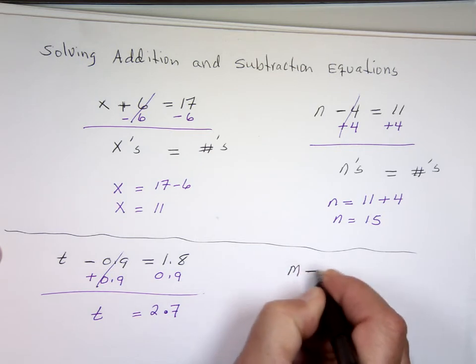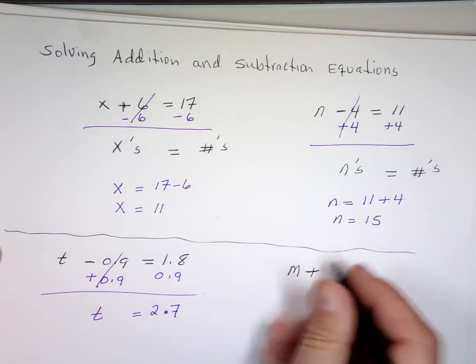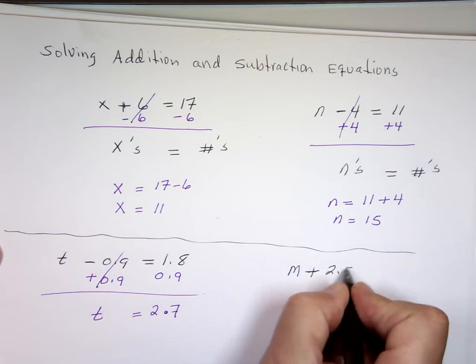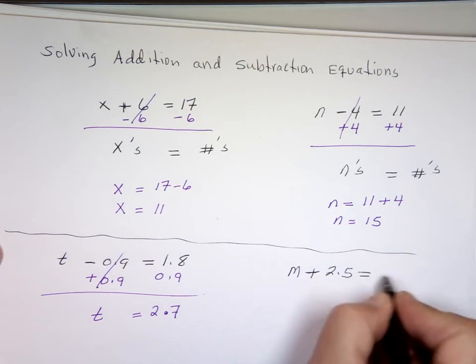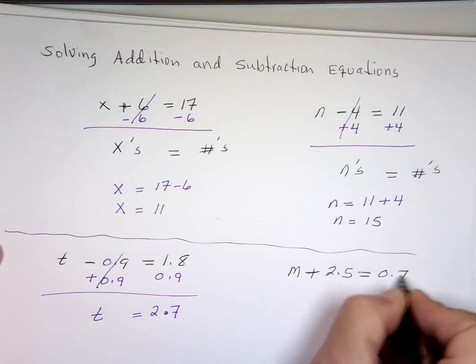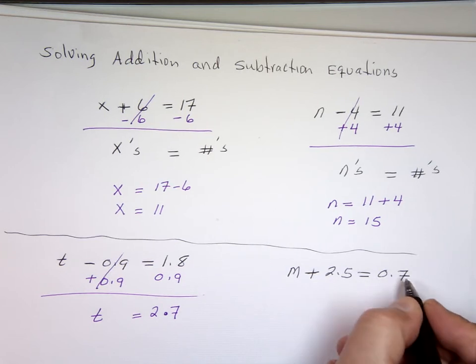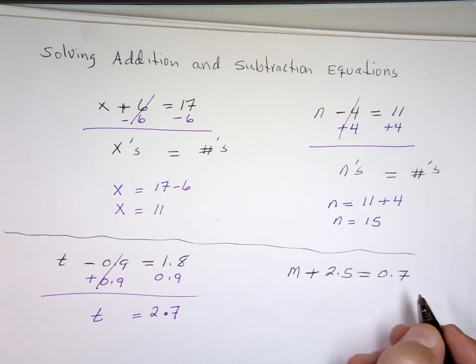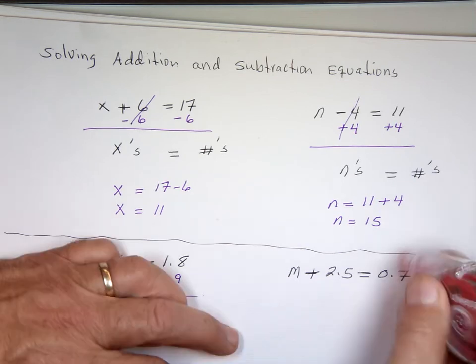m plus 2.5 equals 0.7. Uh-oh. Well, let me change that because we didn't cover negative numbers yet. Instead of 0.7, we'll make it 3.7.